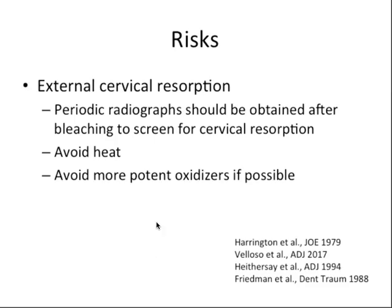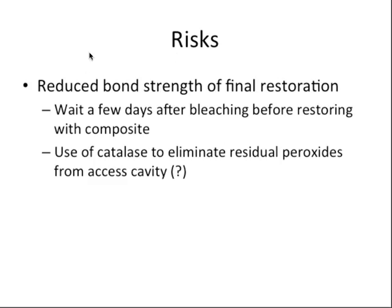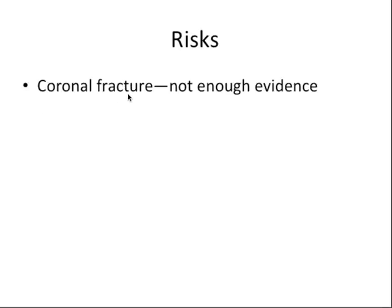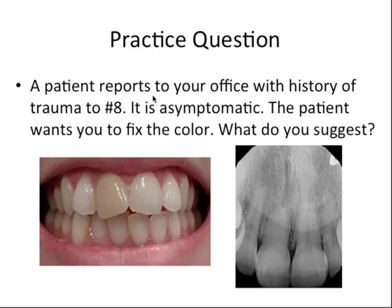As with anything, there are some risks, but most can be mitigated with proper technique. External cervical root resorption is one of the most common, and heat and potent oxidizers like hydrogen peroxide are risk factors. Another side effect is that residual peroxide from the bleaching agents may affect the bonding strength of composites to the tooth. It can also cause chemical burns — there's not enough evidence for this but it can be a potential risk.